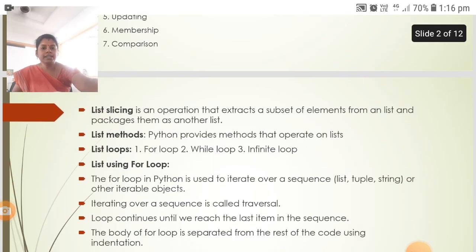List slicing is an operation that extracts a subset of elements from a list and packages them as another list. Python provides list methods that operate on lists. List loops include for loop, while loop, and infinite loop.